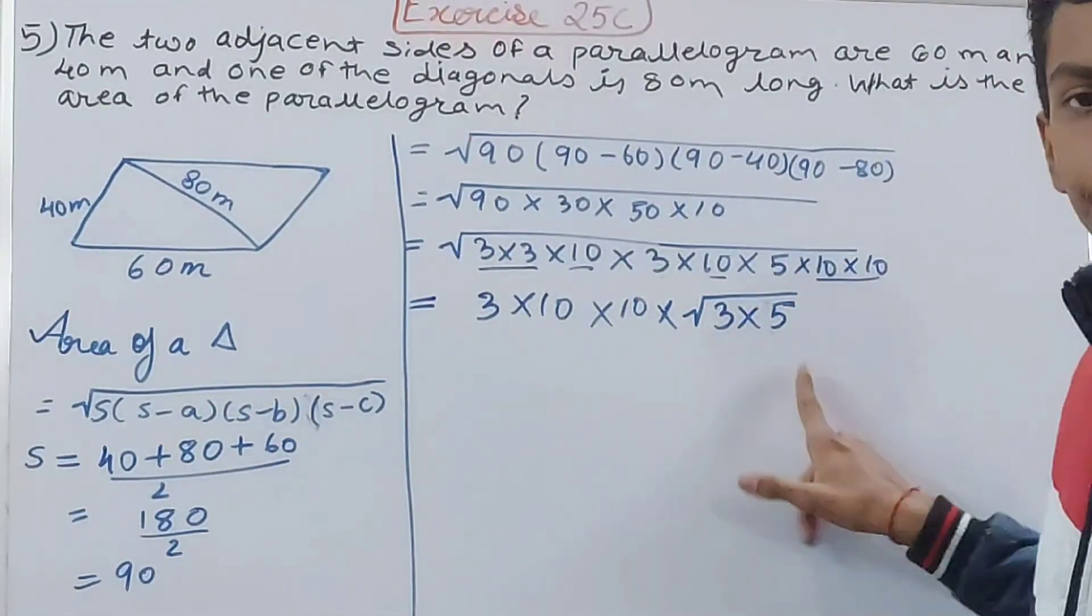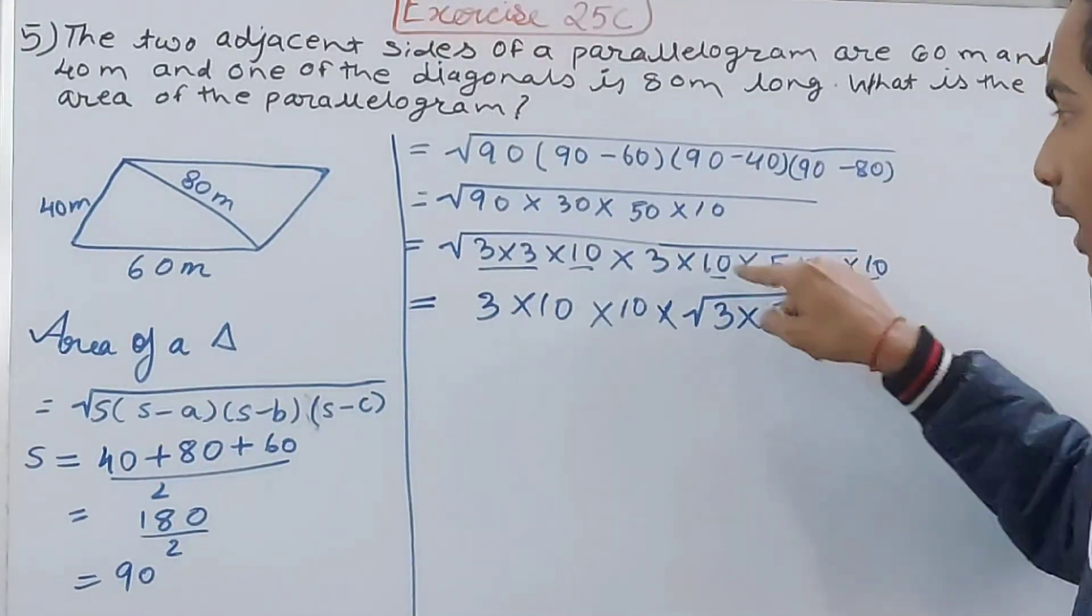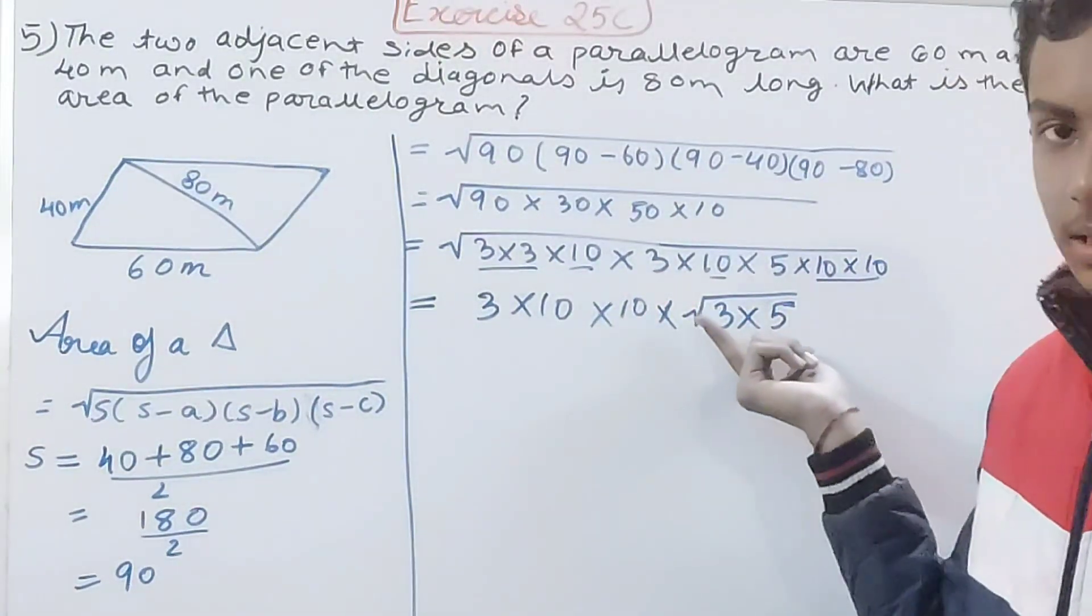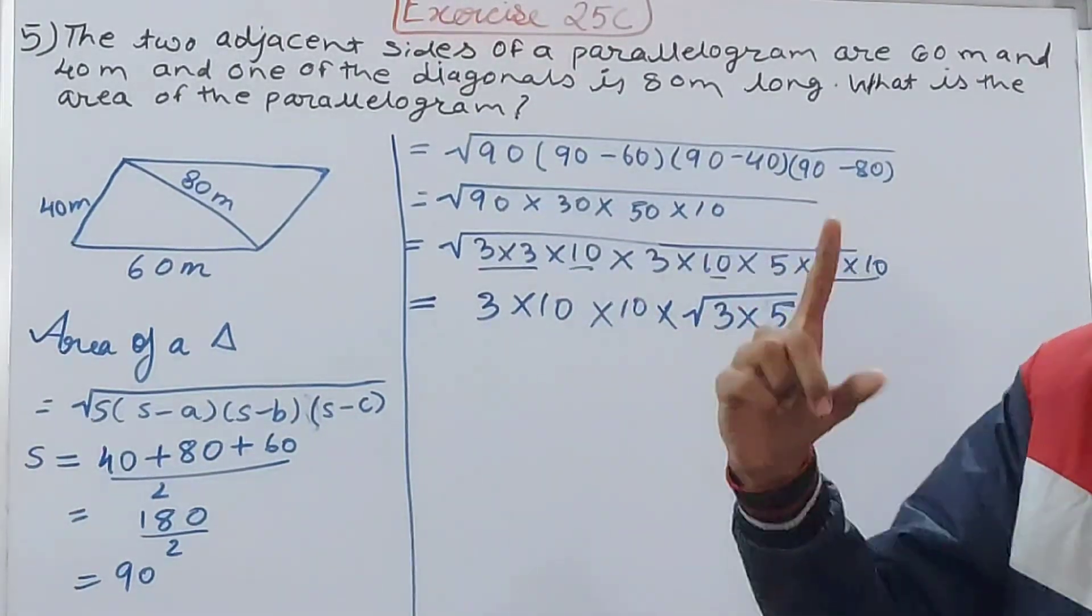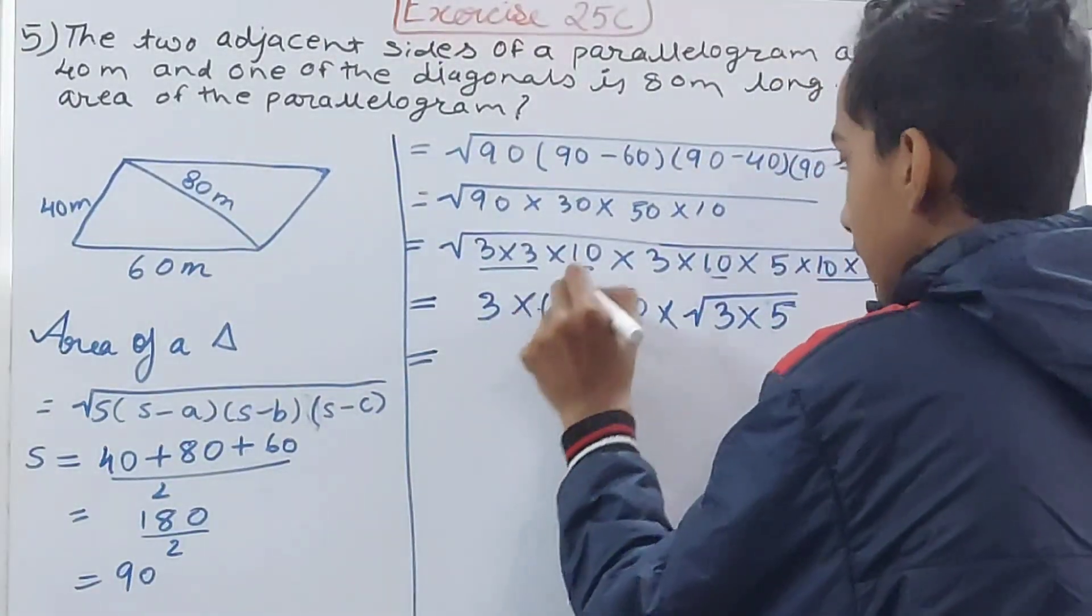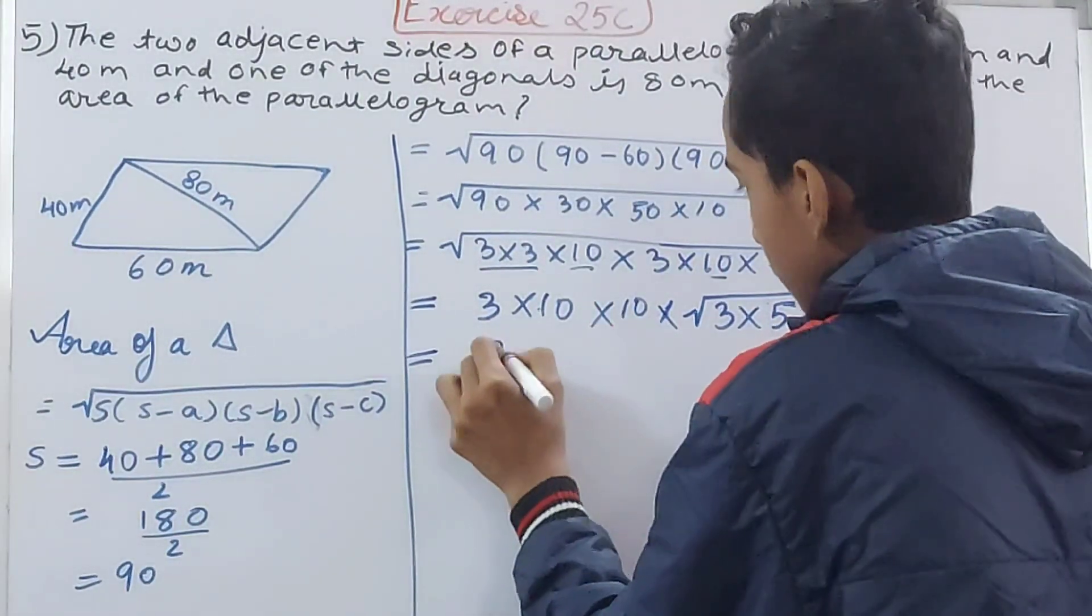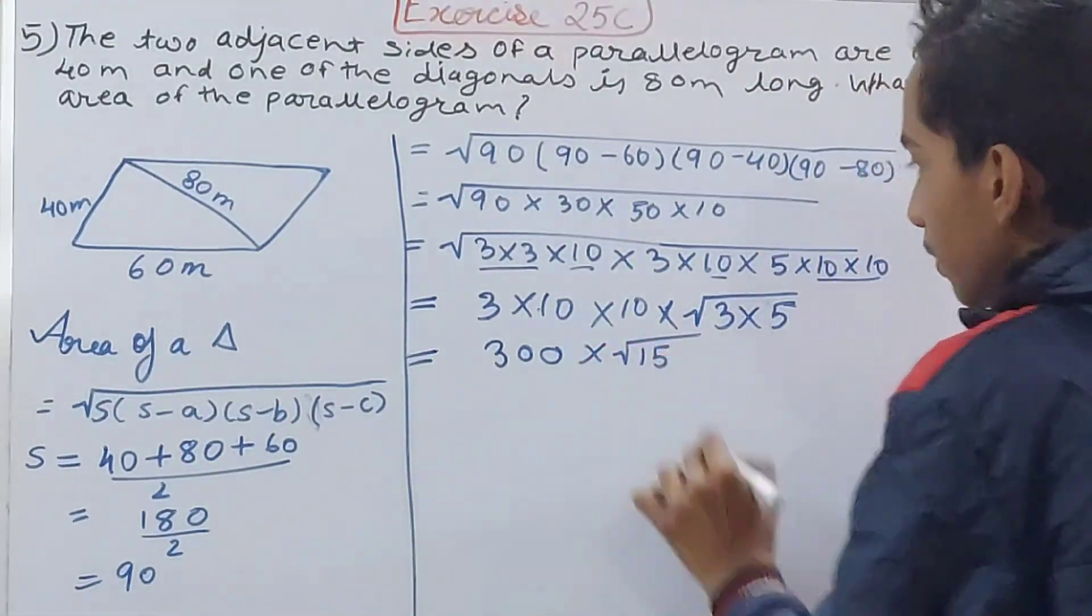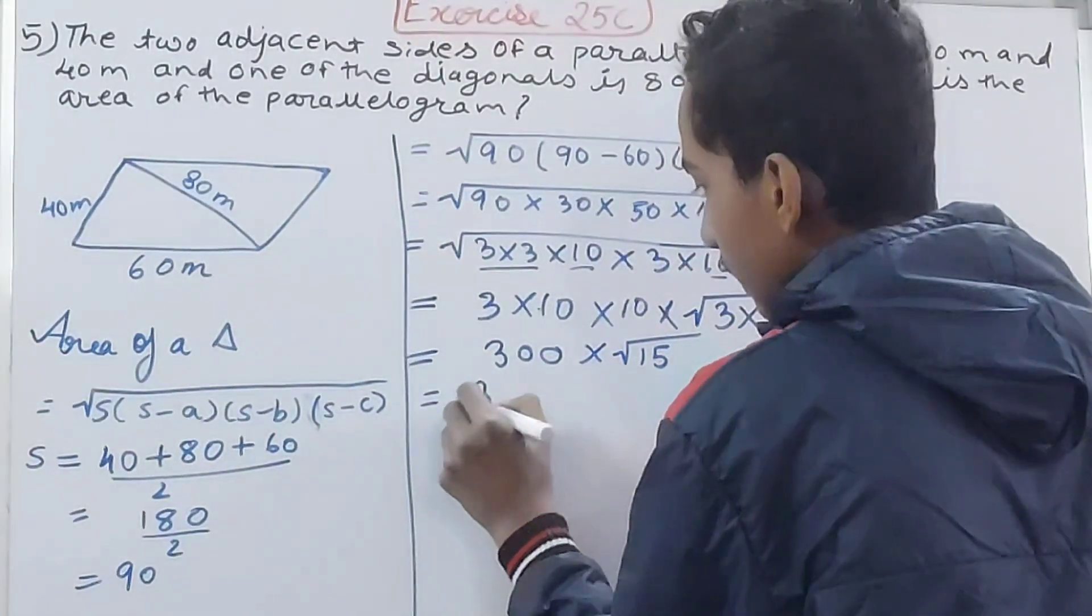This 10 and 10 again - into 10. So this 10 and 10 is paired, and this is left. 3 and 5 are left, so what I will write here is into root (3 × 5). We will not remove the root sign from the numbers that remain unpaired. Let's solve: 3 × 10 = 30, 30 × 10 = 300 × root 15. This is the area of one triangle, which you can write as 300√15.